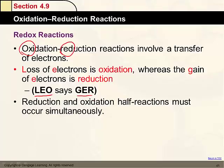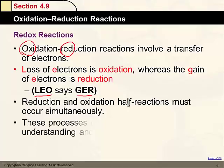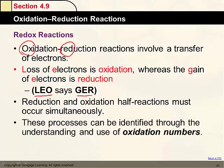We have half reactions — one for the substance that's reduced and one for the substance that's oxidized — and they occur simultaneously in a chemical reaction. We can determine if something is a redox reaction by looking at oxidation numbers.